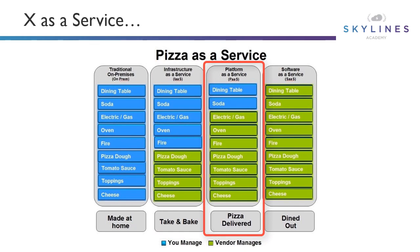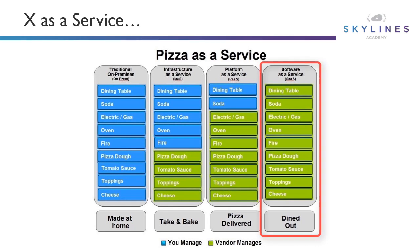As we continue to move up the stack — and this will become clear as we relate it to IT terms in a minute — we have pizza delivered. I'm responsible for less things now. All I have to do is provide a dining room table and perhaps some soda. But the delivery company, such as Domino's or one of the other big ones, takes care of everything else. And finally, all in, dined out — going to a restaurant where everything is provided for me.